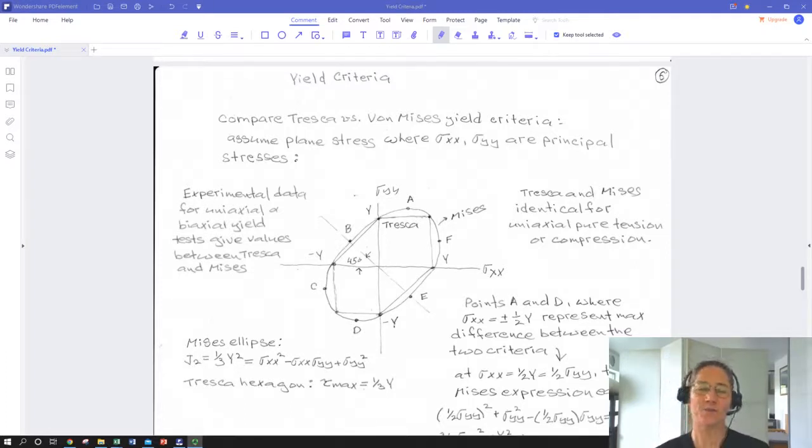At this point we have derived expressions for yielding for any complex loading based on max shear, which has given us the Tresca criteria that we can express as this irregular hexagon if we assume plane stress in the XY and we assume that our X and Y directions are principal directions. Then we have a more complicated derivation in which we used strain energy, deviatoric only, so the shape-changing strain energy.